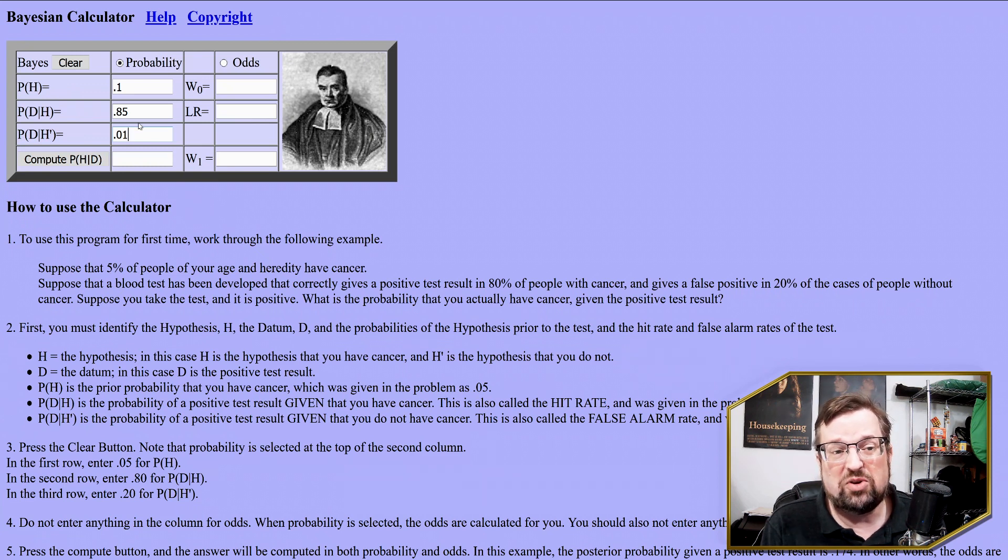Well, remember, it all depends on that prior probability, which people keep ignoring. So when we hit compute, in this case, it's about 90%. Right? So in this situation, if we test positive, there's a 90% chance that we have it. But if that prior is something different, it can make all the difference in the world.